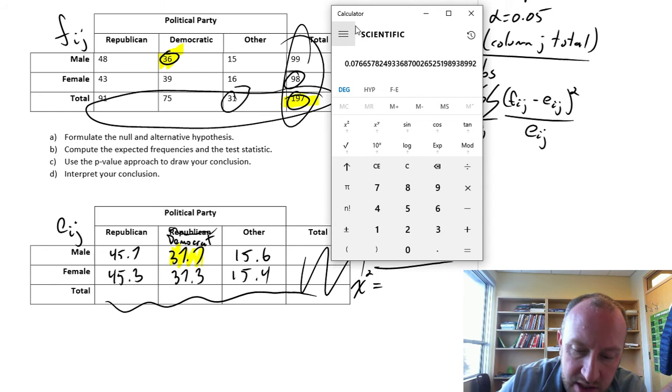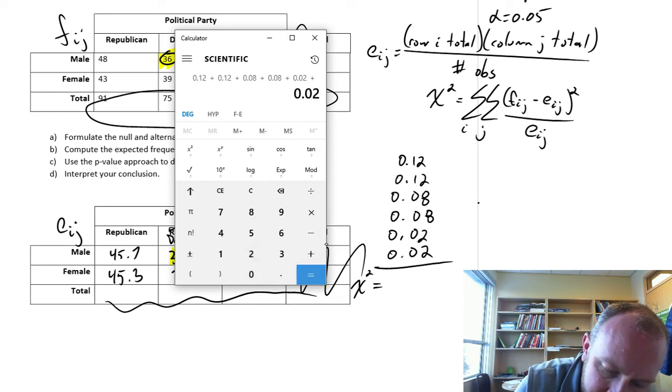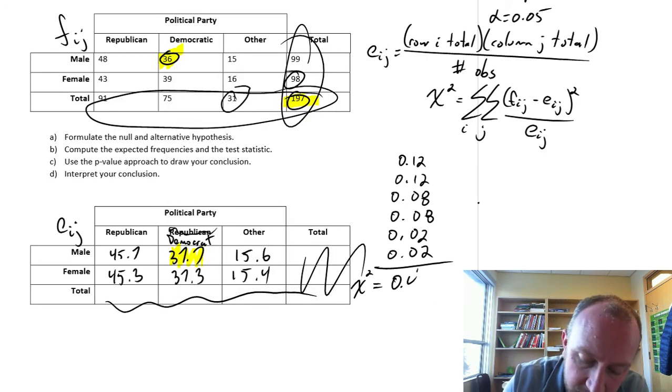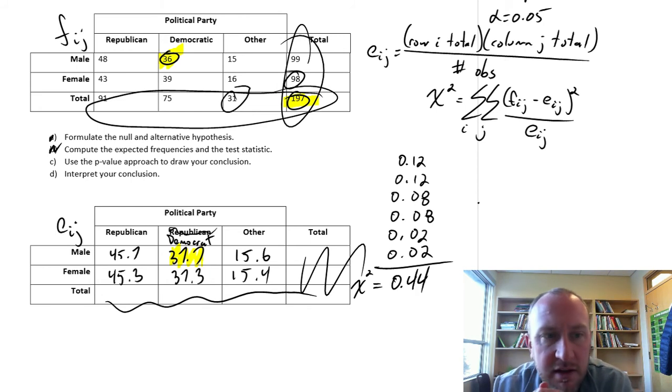Now we just have to add all of those together to give us our chi-squared test statistic. This is going to be 0.12 plus 0.12 plus 0.08 twice plus 0.02 twice, which gives us a test statistic of 0.44. So we've got parts A and B done. Our test statistic is 0.44.